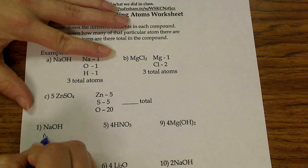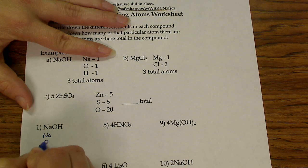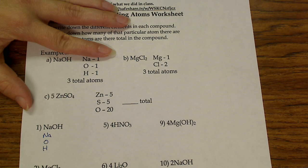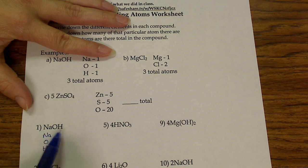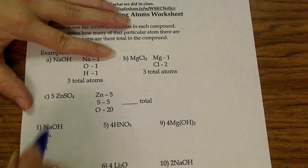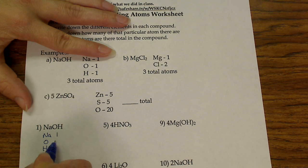So we have sodium, oxygen, and hydrogen. And then we're going to count how many we have of each. I have no subscripts and no coefficients, so I only have one sodium, one oxygen, and one hydrogen.